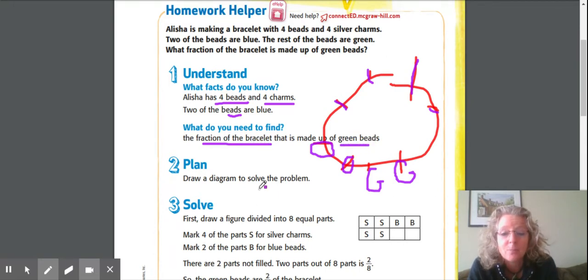So draw it. Here's my ugly picture, but look, these guys are much fancier. They drew for you one, two, three, four silver charms. Then they said, well, two of the beads are blue. One, two. Well, there are four beads all together. Here's the bead, here's the bead.